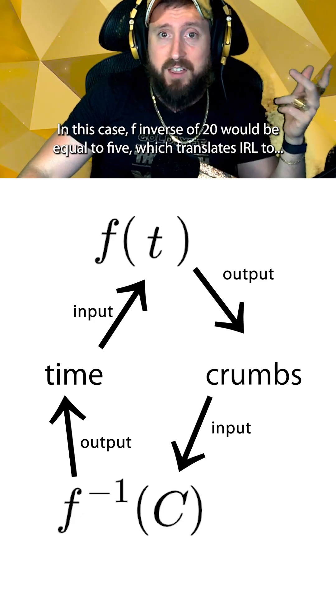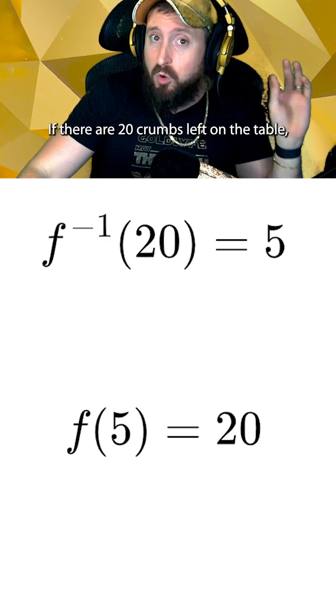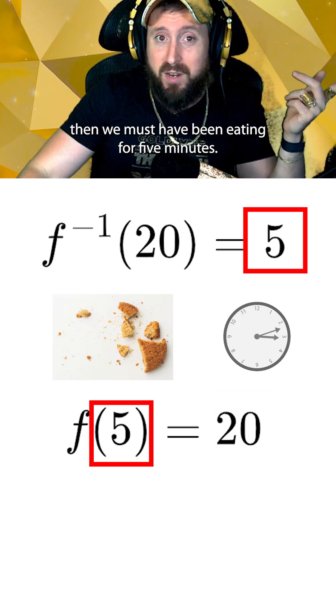In this case, f inverse of 20 would be equal to 5, which translates IRL to, if there are 20 crumbs left on the table, then we must have been eating for 5 minutes.